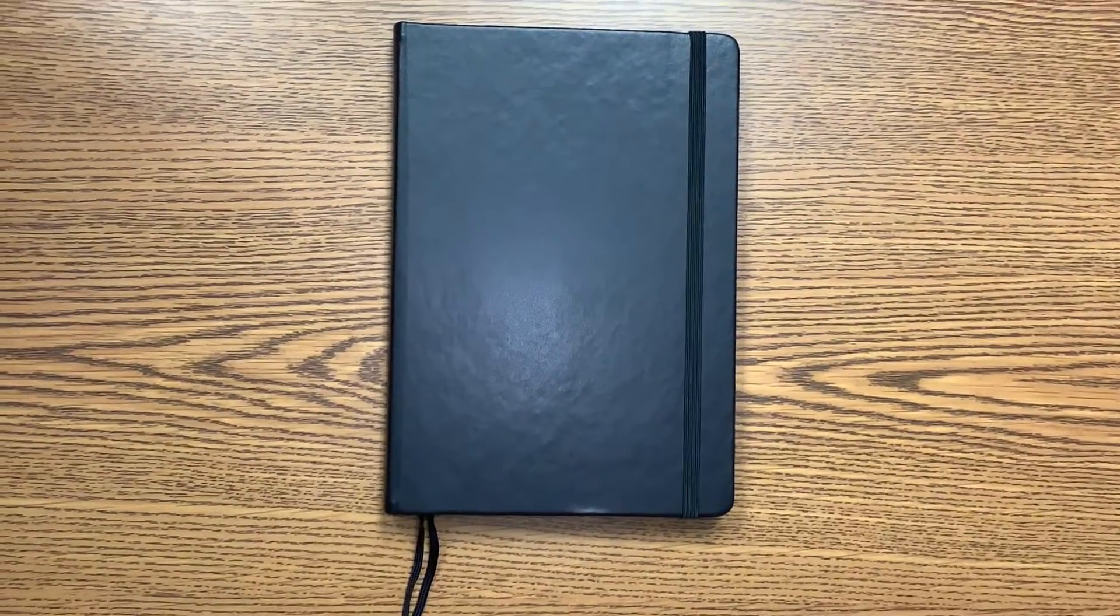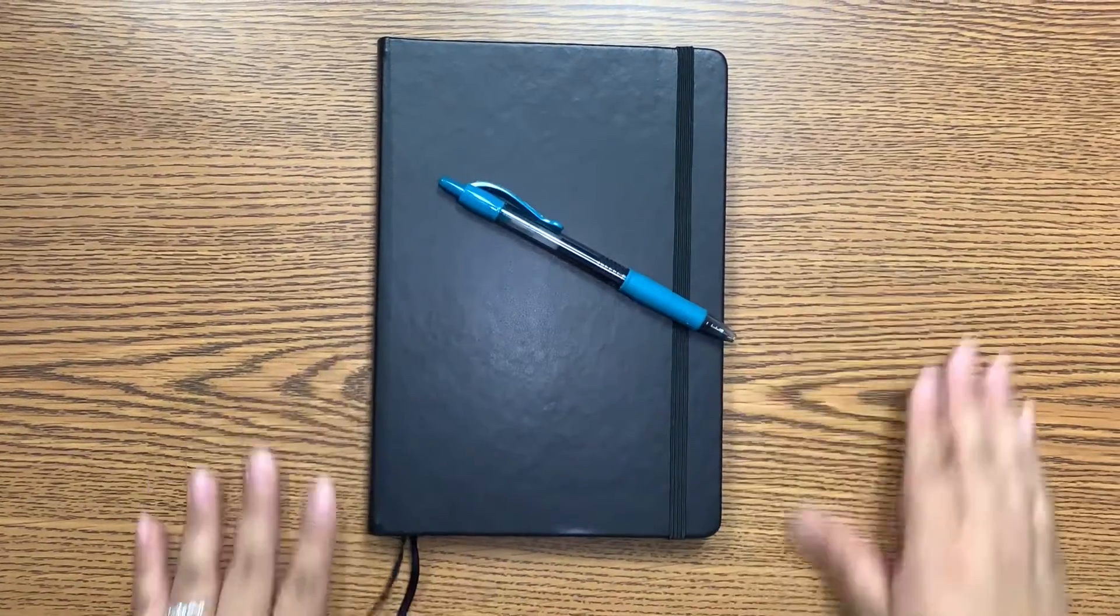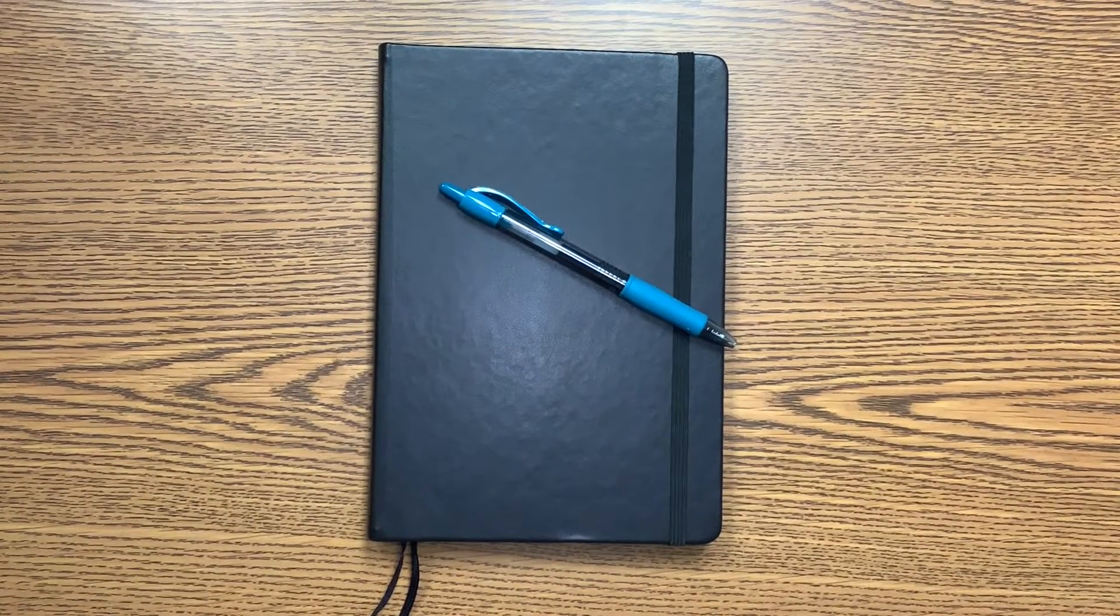To begin bullet journaling, you will need an empty notebook and any writing utensil of your choice. Your notebook can be anything you have lying around the house or a specialty dotted notebook which can be purchased both online and in various stores. The choice is yours on what you pick.